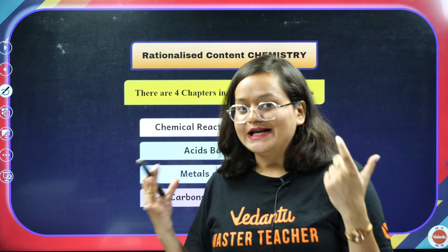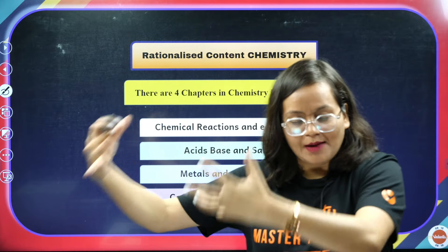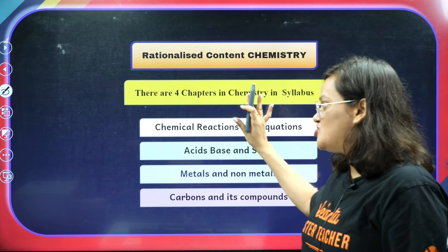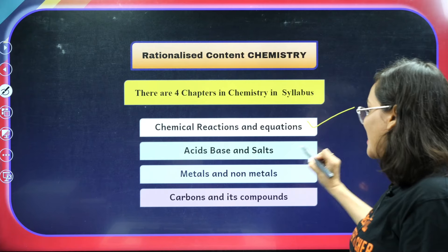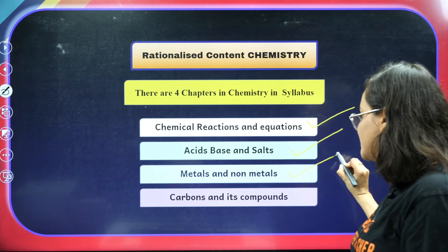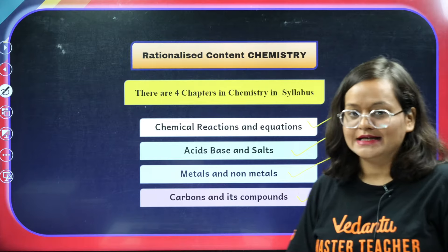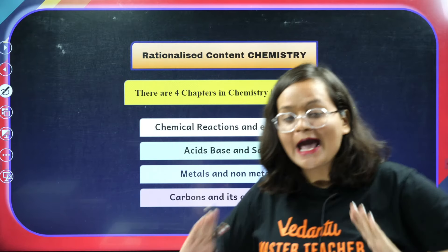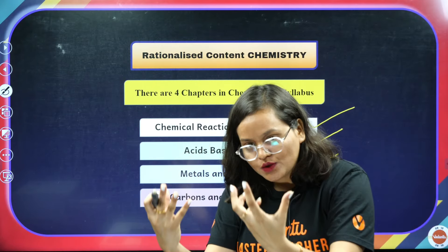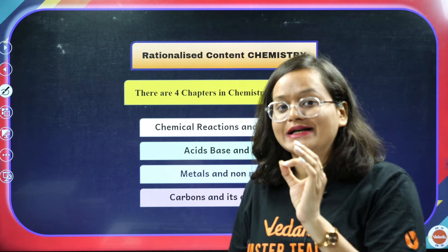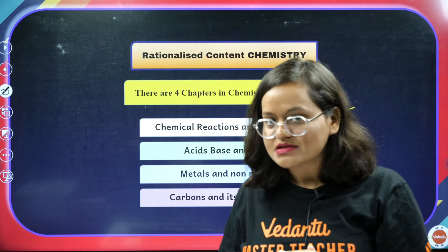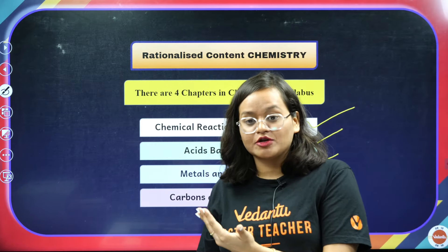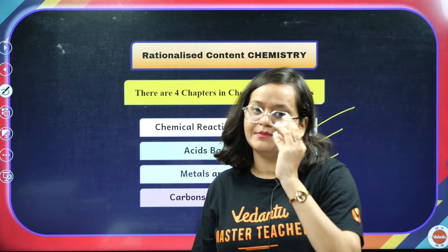You will read rationalized content for students preparing for the coming year's board exam. If I talk about chemistry, there are four chapters: Chemical Reactions and Equations; Acids, Bases and Salts; Metals and Non-Metals; and Carbon and its Compounds. Your seniors have studied these four chapters, and there is no new topic added. One chapter — the Periodic Table — has been removed. Your seniors did not study it, and you are also not going to study it in grade 10. You will encounter the periodic table in 11th, so you can brush up on it then.